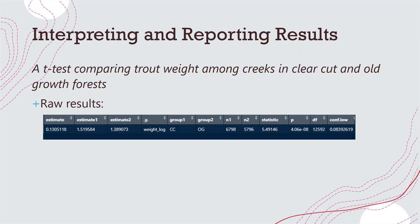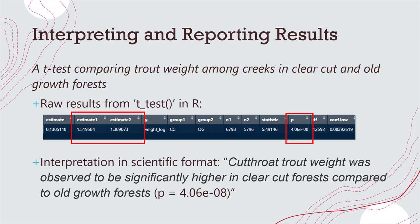Looking at these three main values from the t-test function, this is how we would interpret results in proper scientific format. We would say something like: 'Trout weight was observed to be significantly higher in clear cut forests compared to old growth forests,' followed by the p-value in parentheses. When we say proper scientific format, think of how you would report it in a scientific publication — you state the biological meaning and then put the p-value in parentheses. Sometimes journals may want other statistical test statistics, but here we focus on the p-value and ensuring it was interpreted correctly.